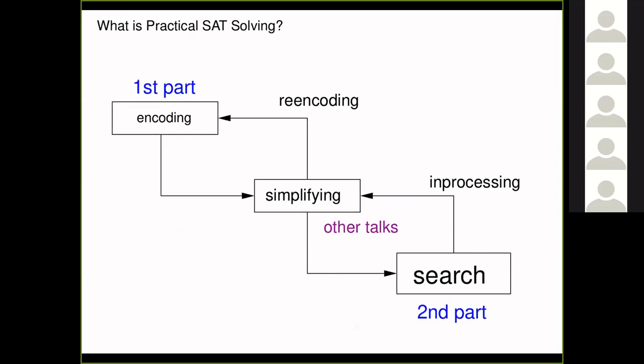Now to the technical part. You can think of SAT in two or three processes. The first is encoding a problem into CNF, which we've seen to some extent. Then you want to simplify and preprocess — I will cover that in other talks, and you can find videos on my web page. At the end you have search. I'll focus the second part of this talk on search. There are also feedback arrows going from search to simplification and from simplification to encoding, which are important but we won't touch on them here.